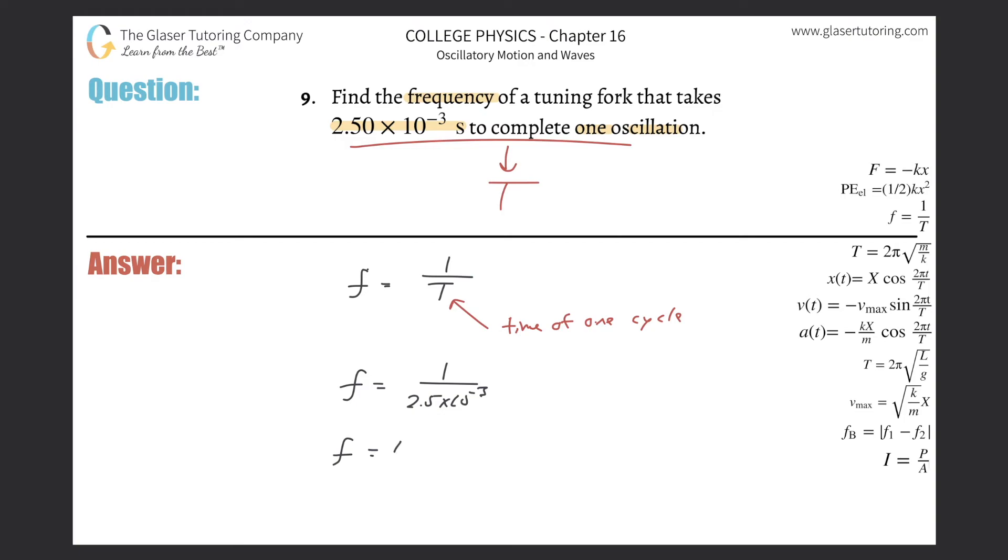So the frequency is basically 400 per second, or in other words, 400 cycles per second. That's kind of what it means. That should hopefully make sense. And another unit for this is basically hertz, if you wanted to put it in hertz.